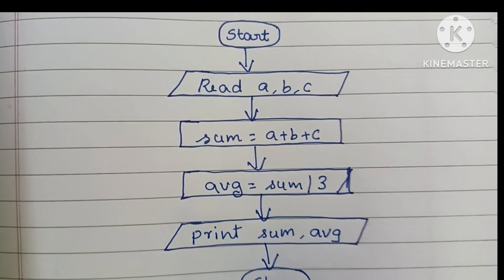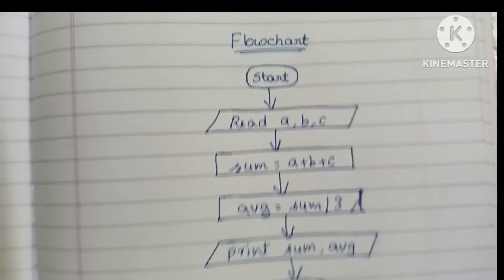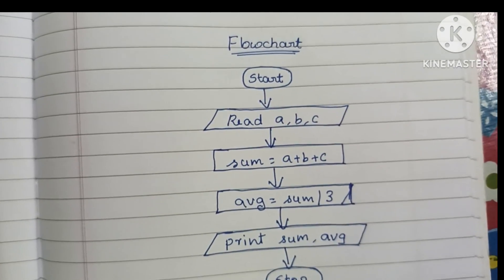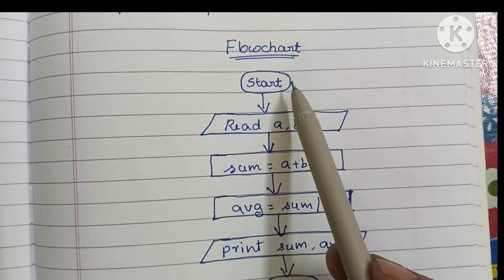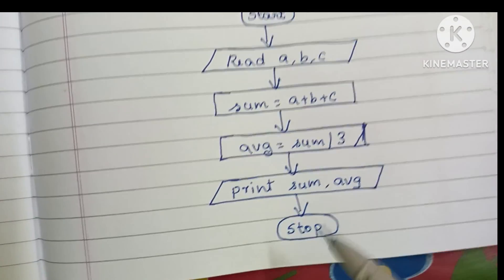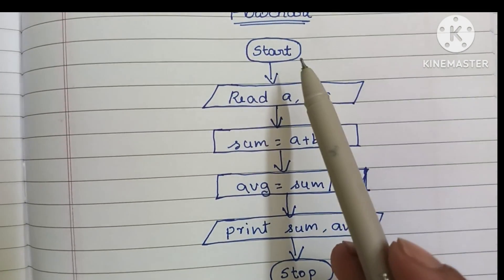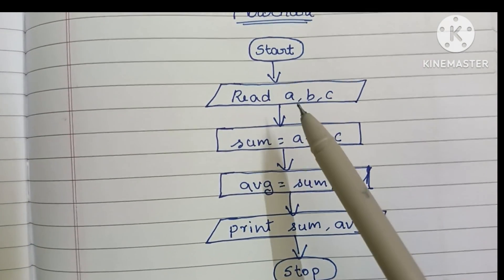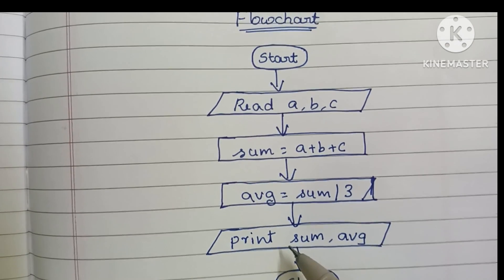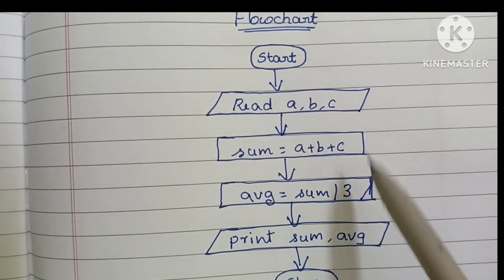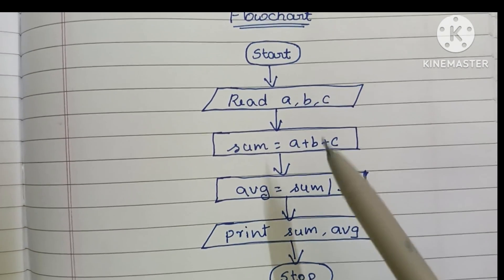This is the flowchart to find sum and average of three numbers. The start and stop statements are always written within an oval shape. Input and output values are written within a parallelogram shape, and calculations are done within a rectangular shape.